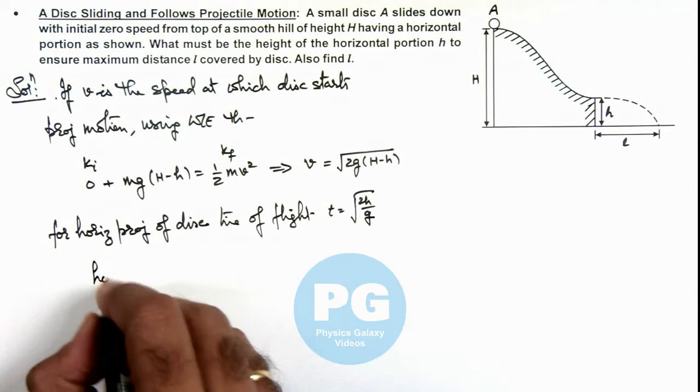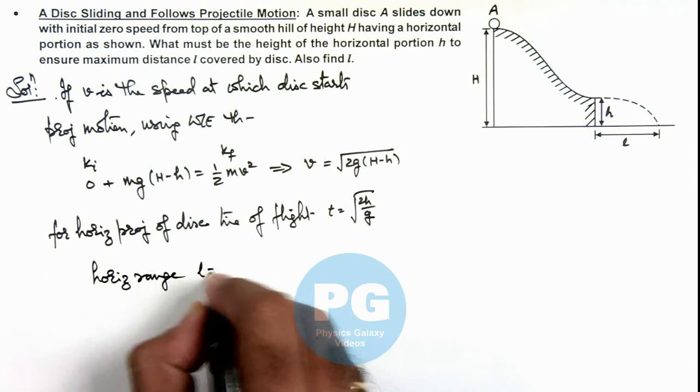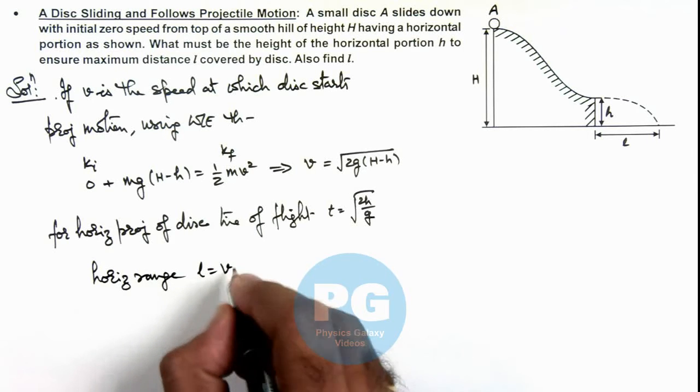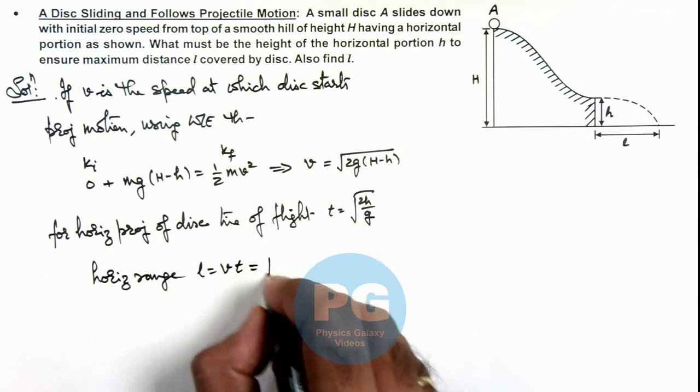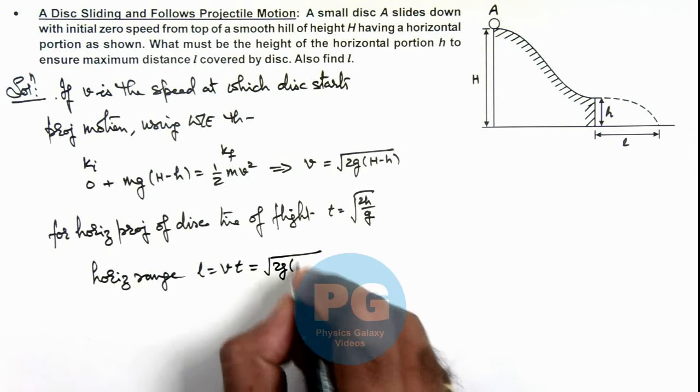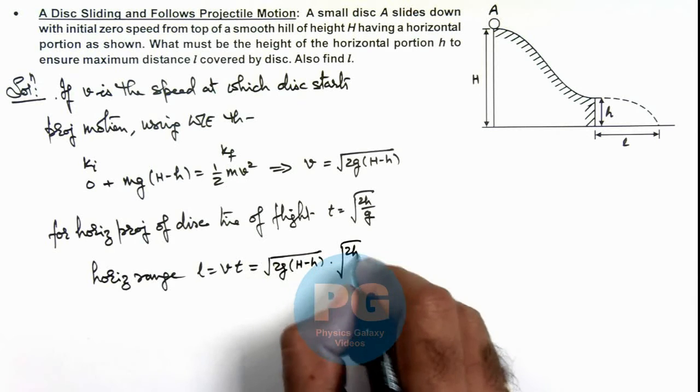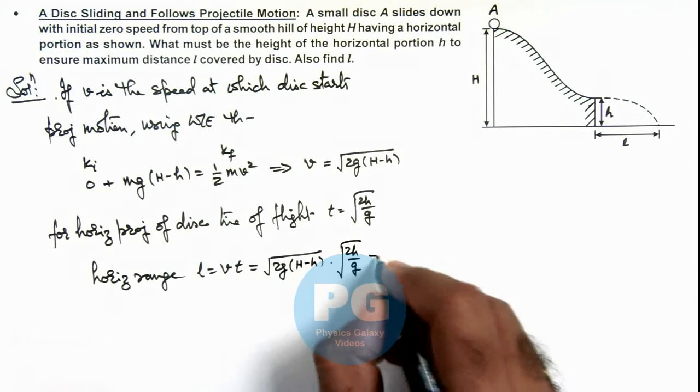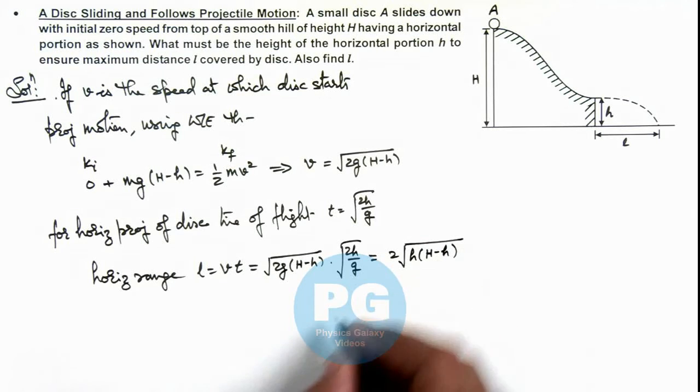L is equal to the speed with which it is projected multiplied by the time. So this is root of 2g(H minus small h) multiplied by root 2 small h by g, which is twice of under the root h multiplied by H minus small h.